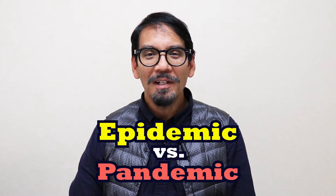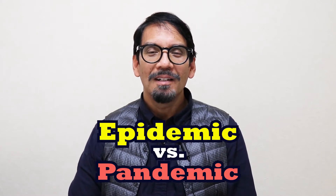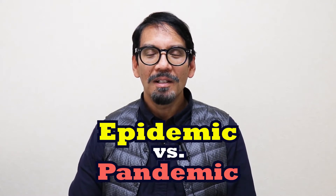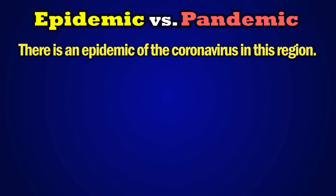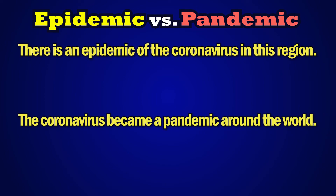Do you know the difference? Let's take a look at these two example sentences. Number one: there is an epidemic of the coronavirus in this region. Number two: the coronavirus became a pandemic around the world. Can you guess the meanings?